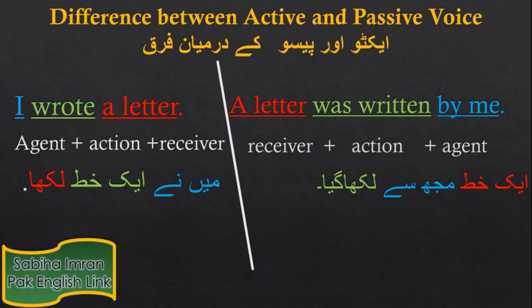Active passive voice समझने के लिए सबसे पहले यह समझना जरूरी है कि agent, action और receiver क्या होते हैं। इस sentence 'I wrote a letter' में action है 'wrote' यानि लिखा। जो लिख रहा है वो agent है यानि doer of the action। जबके लिखने का effect किसने receive किया — वो है 'letter' यानि खत। जो भी जुम्ला passive में तब्दील करना हो, उसमें action, agent और receiver की पहचान करना जरूरी है।